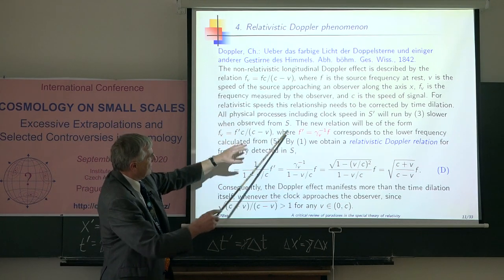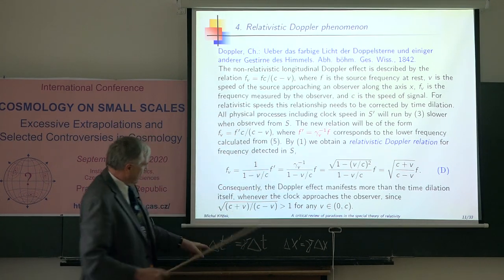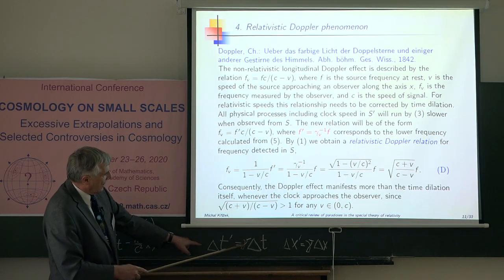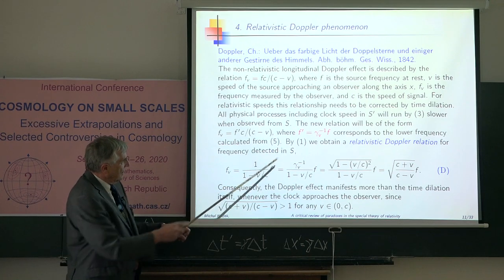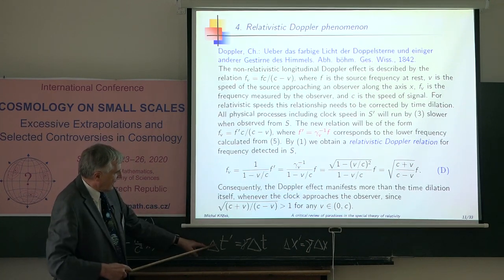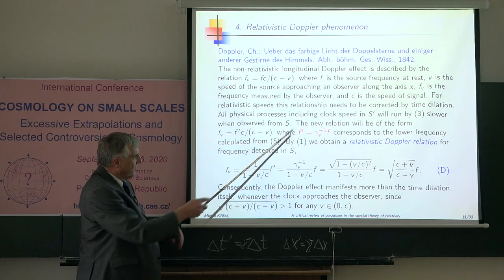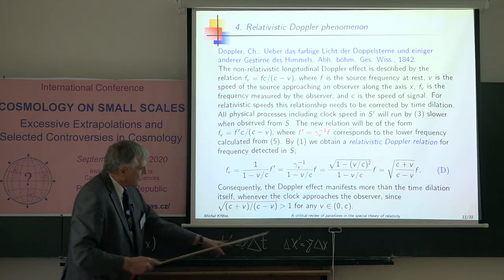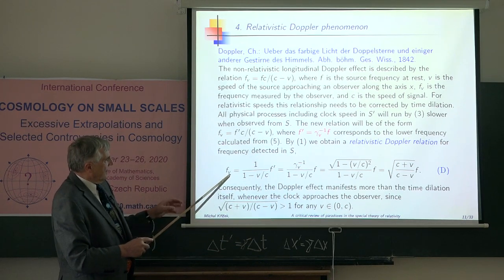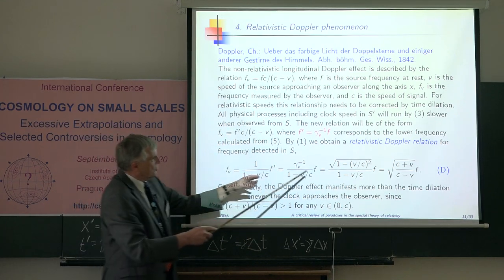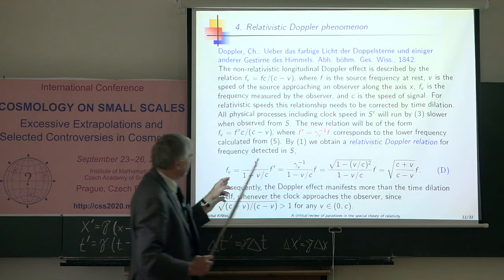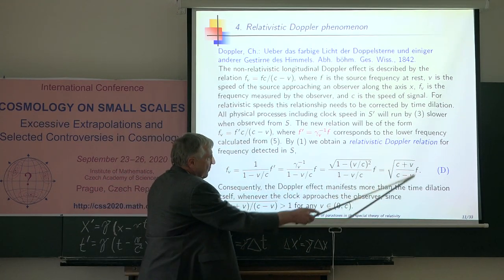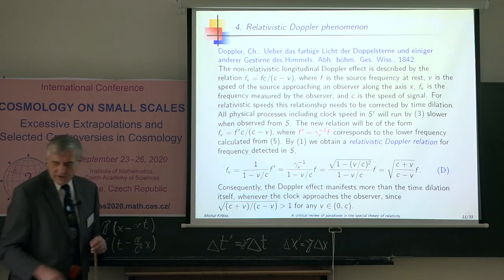But we have to include this formula, the dilation of time. If you do some substitutions, for instance here, this red formula, this is exactly that formula. Because this is frequency, this is time. One over frequency is time. Therefore you have here gamma to minus one. And if you do substitutions, you end up with the Doppler relativistic formula for the change of frequency.